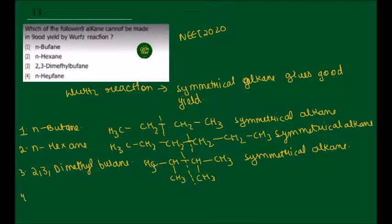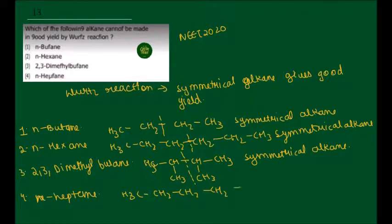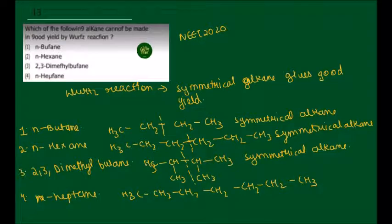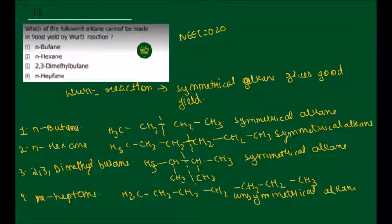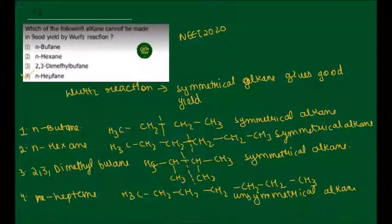Next is N-heptane. N-heptane structure: CH3-CH2-CH2-CH2-CH2-CH2-CH3 — 7 carbons. We can see this is an unsymmetrical alkane, so N-heptane will not give good yield by Wurtz reaction. The question asked which alkane will not give good yield — that is the unsymmetrical N-heptane. So the correct answer is the fourth option.